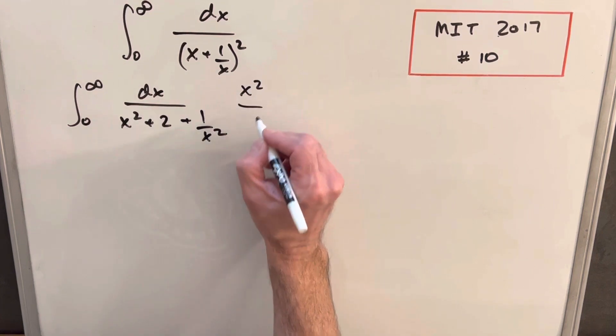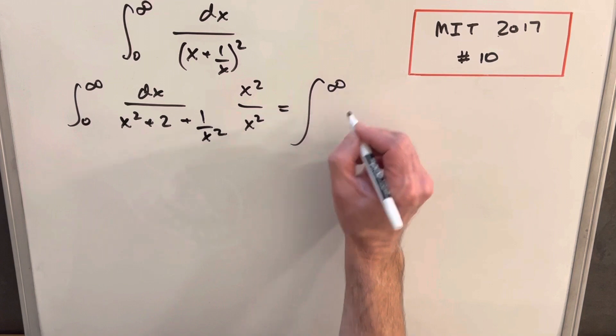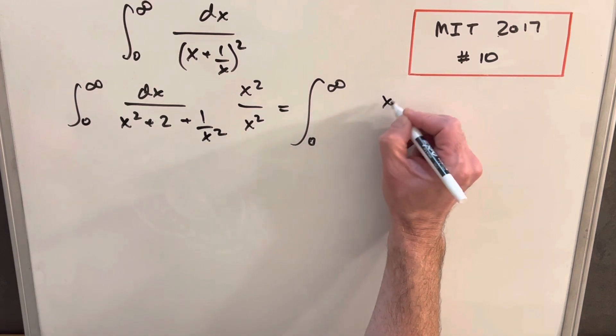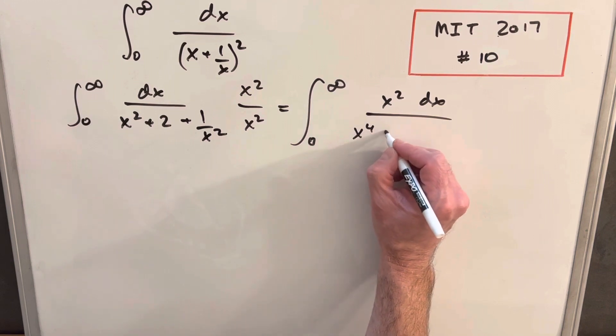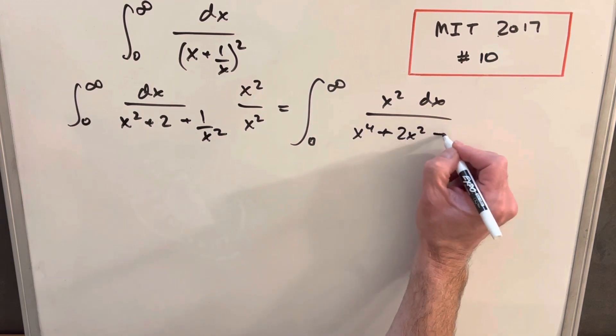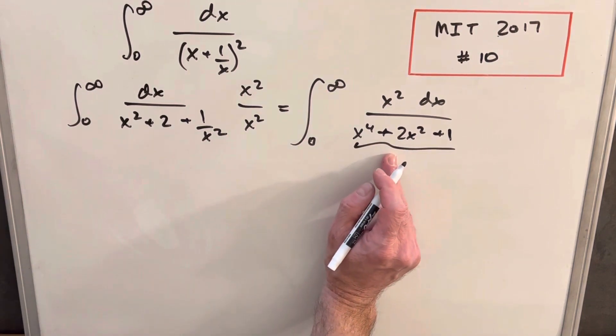And then if we multiply numerator and denominator by x squared, we're going to have infinity to zero x squared dx over x to the fourth plus 2x squared plus 1. And then this piece here is clearly a perfect square. So this is going to be x squared plus 1 squared.